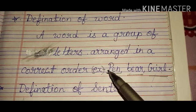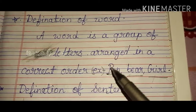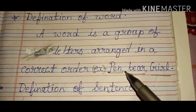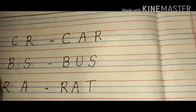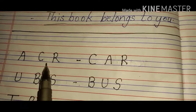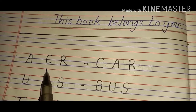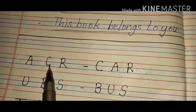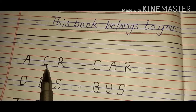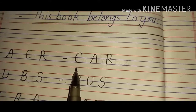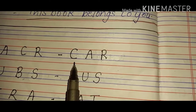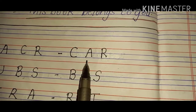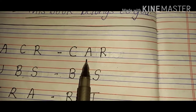So children, letters he words nahi hote. Agar proper order mein arrange nahi kiye gaye, toh voh word nahi kehlayega. Jaisi ki maine aapko yahan per bataya ki A, C, R — yeh correct systematic order mein nahi likha hua hai, toh isse hum word nahi kahenge. Word kya hai? Jo proper aur correct order mein write kiya hua ho. See children: C, A, R — car. So this is the proper word.